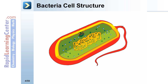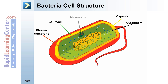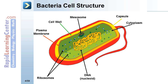Bacterial cell structure. These are some of the characteristic features of a bacterial cell: plasma membrane, cell wall, capsule, cytoplasm, mesosome, DNA — which is in the nucleoid region. The nucleoid region is a dense or darkish area, but it is not surrounded by a membrane, so the DNA is in the nucleoid area. Also present are ribosomes and flagellum.